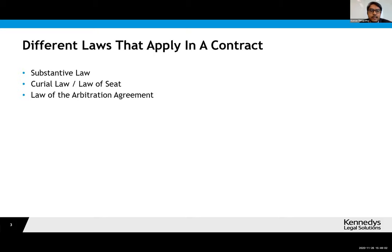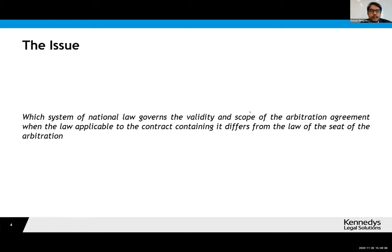In the Enka and Chubb case, that was the main issue to be determined. As the Supreme Court spelled out, they had to determine which system of law governs the validity and scope of the arbitration agreement when the law applicable to the contract containing it differs from the law of the seat. The significance of the law of the arbitration agreement is that it determines whether your arbitration clause is valid and whether the dispute falls within the scope of that arbitration agreement.